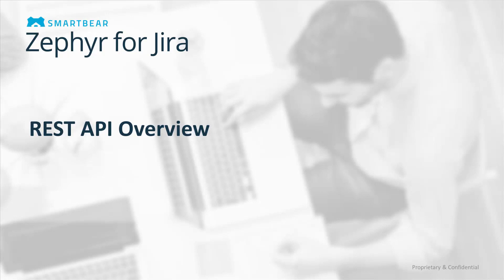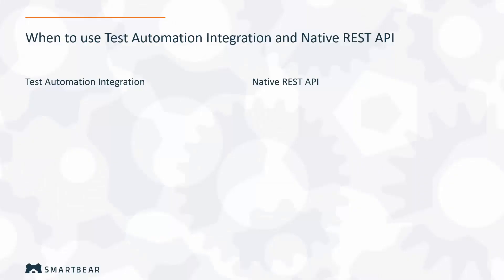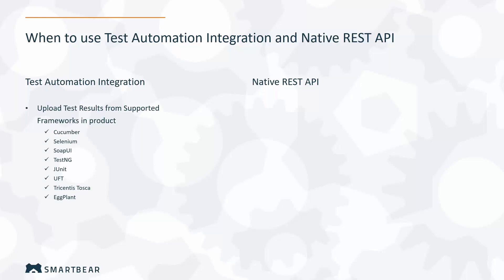Let's begin this overview by discussing two components that may seem similar within Zephyr for Jira: the test automation integration, which is covered in a separate video, versus the REST API, and when to use each. When looking at the test automation integration and the native REST API, it's important to remember the use cases for each functionality. The test automation integration is really meant for when you need to upload test results from a supported framework that we offer in product.